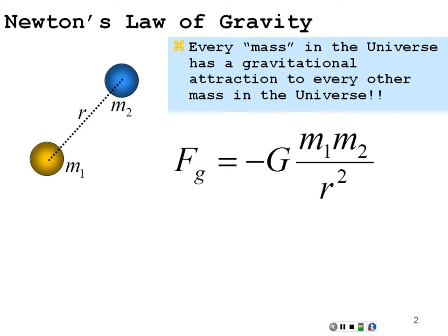The force of gravity is equal to negative some constant G — the gravitational constant — times mass 1 times mass 2, over the distance between them squared. When we talk about the distance between two masses, we go from the center of mass of mass 1 to the center of mass of mass 2. You do not go from the surface to the surface — you go from center of mass to center of mass.